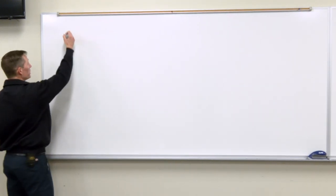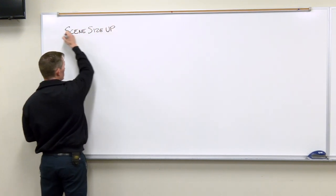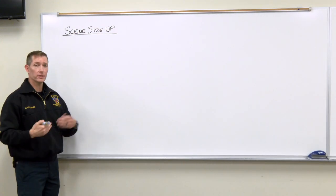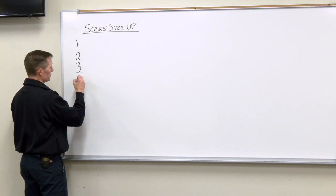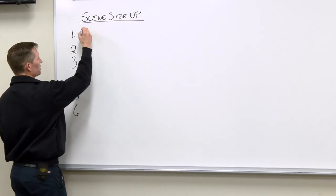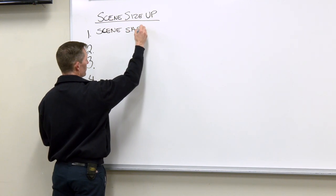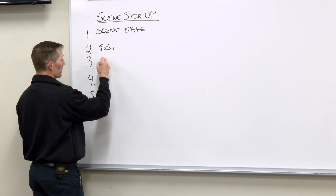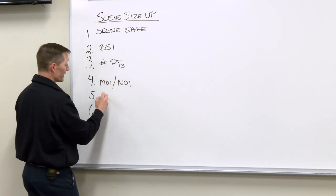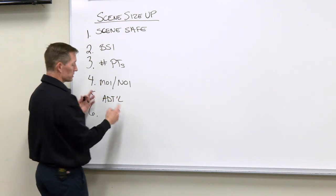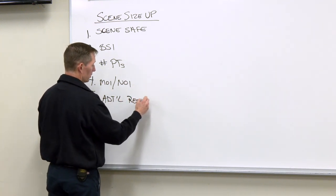When we talk about patient assessment, we always start with the compartment called the scene size-up. During the scene size-up, these are all the things I need to do my job in my patient assessment process. There are six things here: scene safety, BSI, how many patients am I dealing with, mechanism of injury or nature of illness, and do I need any additional resources — remember, this isn't just ALS or manpower, we're talking about police, Pepco, things like that.